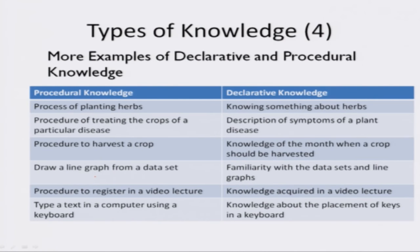To understand the difference between declarative and procedural knowledge more clearly, consider these examples. The process of planting herbs — collecting different seeds, sowing them into soil, and watering them appropriately — is a sequence of steps and hence is procedural knowledge. But knowing about herbs is a collection of facts and hence is declarative knowledge. The procedure of treating crops for a particular disease is a step-by-step process and hence is procedural, but the description of symptoms of a plant disease is a collection of facts and is declarative. The procedure to harvest a crop is procedural, but knowledge of the month when a crop should be harvested is a fact and is declarative.